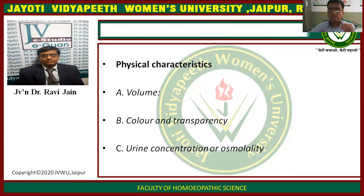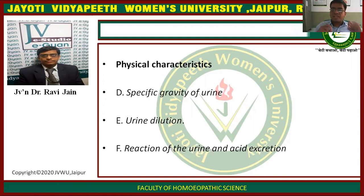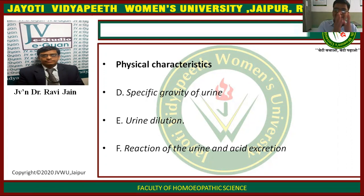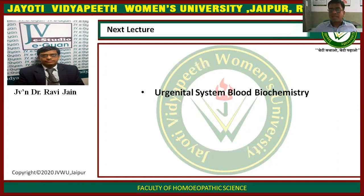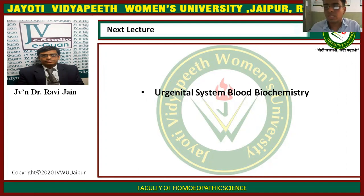I will again repeat the physical characteristics of the urine that need to be assessed in a urine sample. First, the volume of the urine — 24-hour sampling can be taken. Color and transparency — what is the color of the urine and whether it is transparent, translucent, or opaque. The urine concentration and osmolarity has to be checked. The specific gravity of the urine. The urine dilution — whether the urine is too concentrated or dilute. The reaction of the urine — whether it is acidic, alkaline, or neutral. These features have to be checked while doing the general physical examination of the urine for diagnosis of any kind of renal disorder. In the next lecture, we are going to discuss about the blood biochemistry that we commonly see in patients with urogenital disease or the urinary system disease.